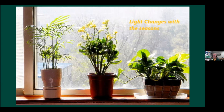Light also changes with the seasons. In winter when the light is weak and days are short, we put some plants directly in the window to get sunshine. But that same window in July would be way too intense and could cause sunscald. It's important to remember to adjust where you've got a plant in the window depending on the season.